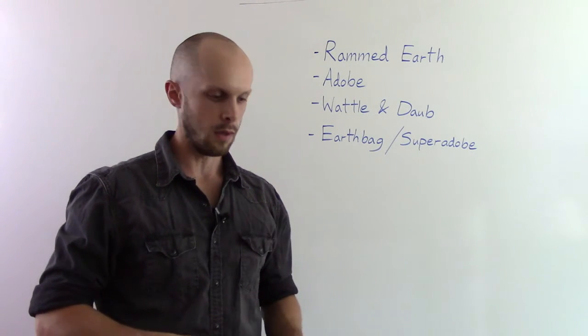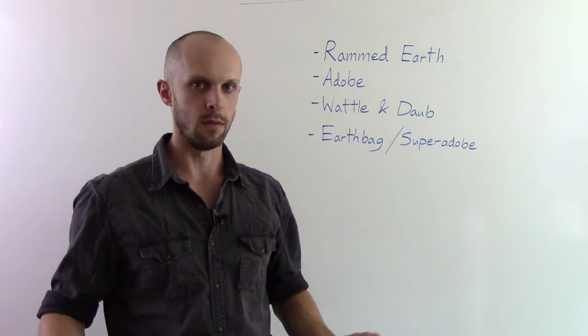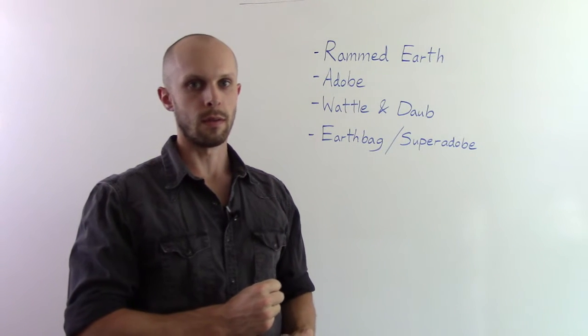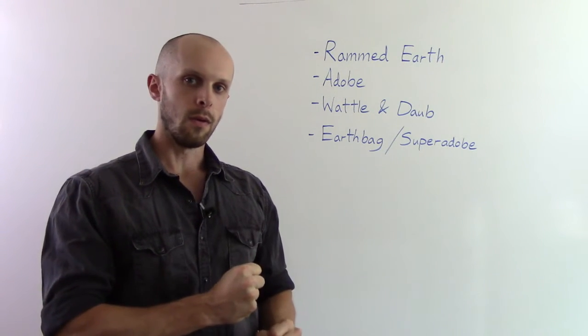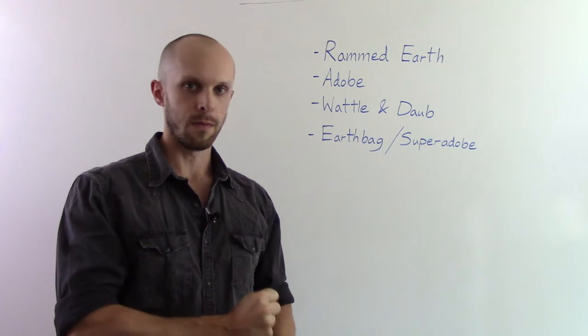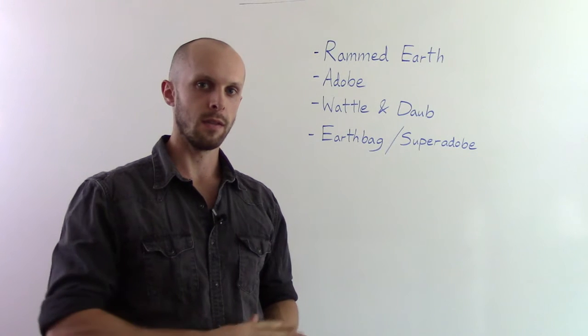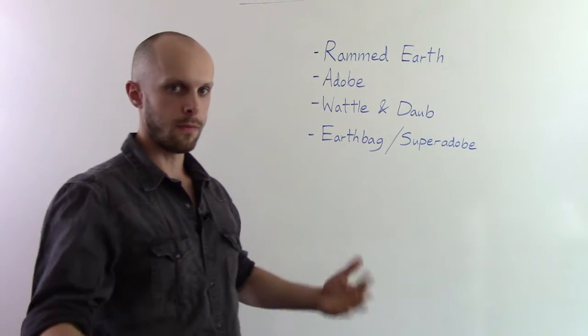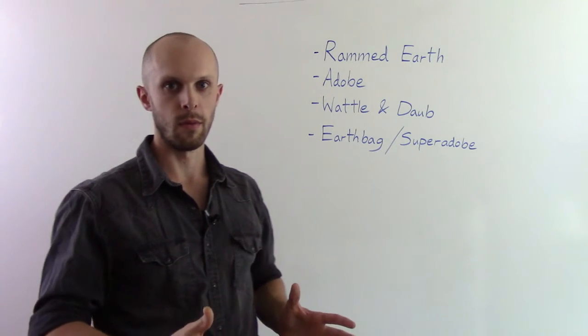Traditionally you'd use a hand tamper, which are still commonly used. But today you can also get a pneumatic tamper, which will speed up the process considerably. So you're basically just compacting that soil and aggregate into this form. It's almost like creating sandstone because you're compacting it so much. And you remove the forms and you have a solid wall, and it's like stone almost.